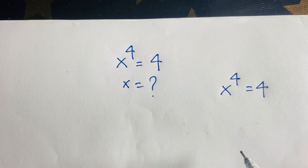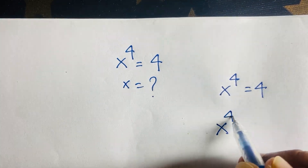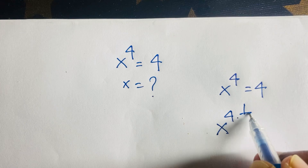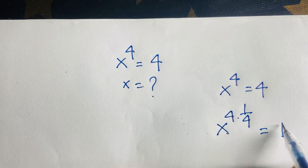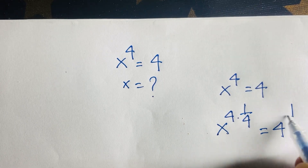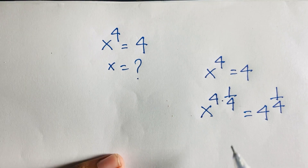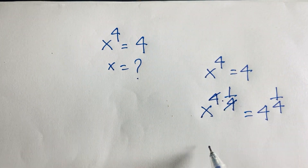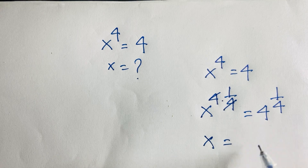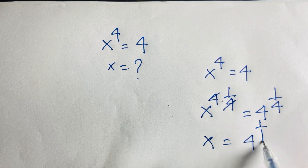If I use both sides, power is 1 over 4, and here is 4 to the power 1 over 4. This 4 and this 4 cancel, and we will find out that x is equal to 4 to the power 1 over 4.